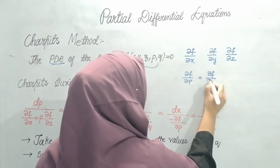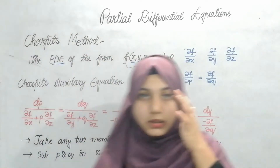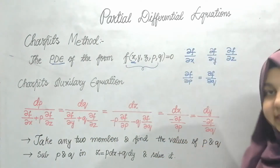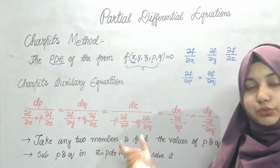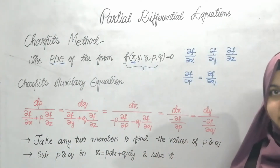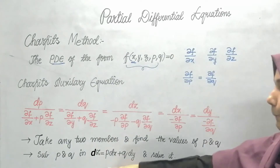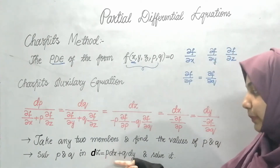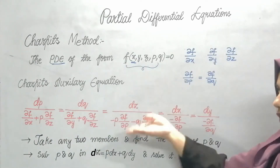After finding these partial differential values, I substitute all of them into the auxiliary equation. Then I take any two members from the auxiliary equation and find the values of p and q. After finding p and q, I substitute them into dz = p dx + q dy. My aim is to substitute the values of p and q into this equation.